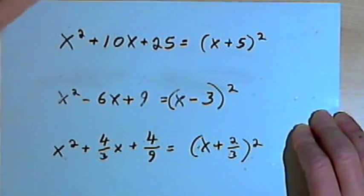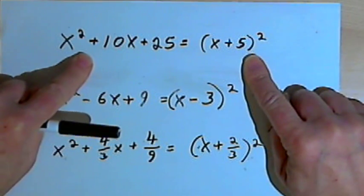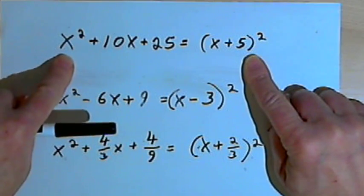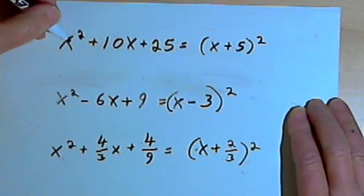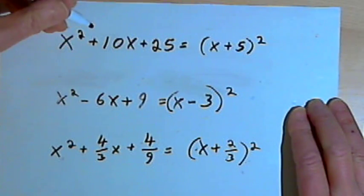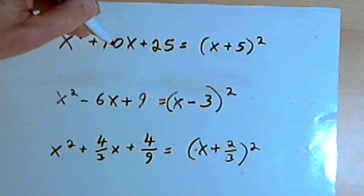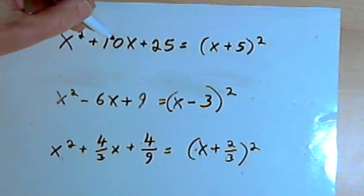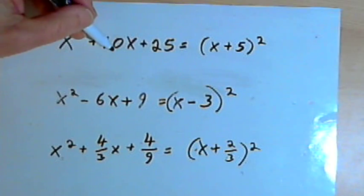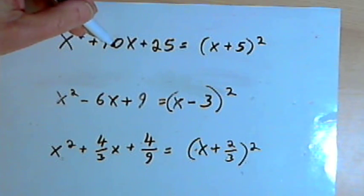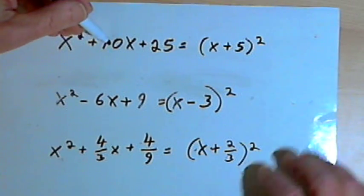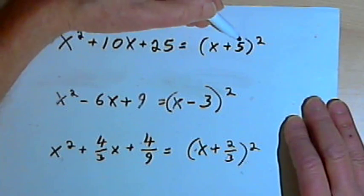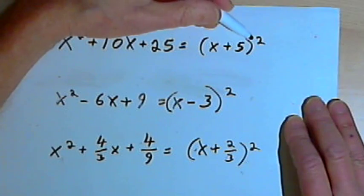I want to talk about the relationship between these two forms of the same thing. If I look at the trinomial x squared plus 10x plus 25, if I divide the coefficient of the middle term — the 10 — in half and square it, I get the last term, 25. If I just divide it in half, I get the constant, the second term of the binomial, which gets squared.